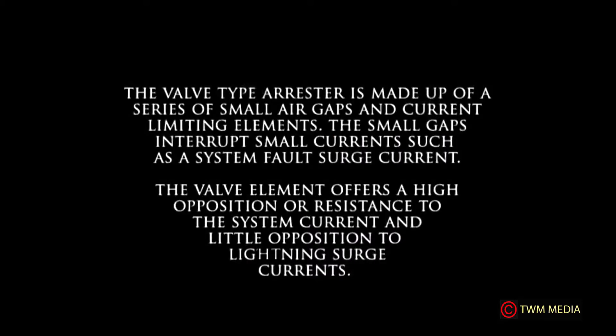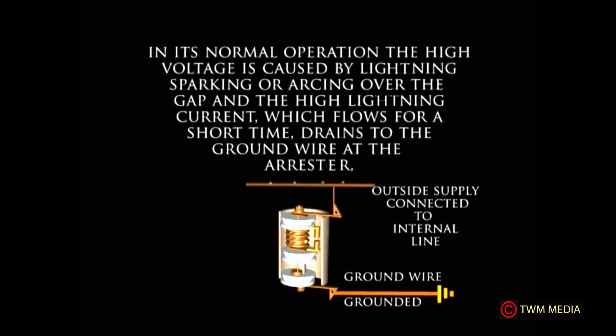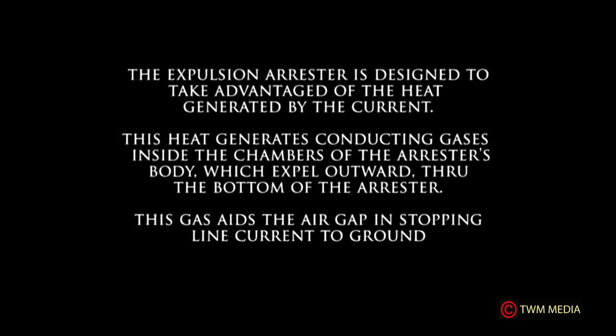The thyroid valve element and a lead terminal connected to ground. The valve type arrestor is made up of a series of small air gaps and current limiting elements. The smaller gaps interrupt small currents, such as a system fault surge current. The valve element offers high opposition or resistance to system current and little opposition to lightning surge currents. In normal operation, high voltages caused by lightning spark or arc over the gap, and the high current, which flows for a short time, drains to the grounded wire at the arrestor. The expulsion arrestor is designed to take advantage of the heat generated by the current. The heat generates conducting gases inside the chambers of the arrestor's body, which expel outward through the bottom of the arrestor. The gas aids the air gap in stopping line current to ground.